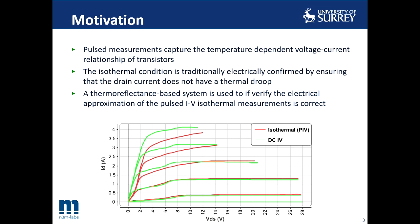Post-IV measurements are usually employed to capture the temperature-dependent IV characteristics of transistors in an isothermal environment. The isothermal condition is usually electrically checked by ensuring that the drain current does not have a thermal droop, or in other words, we reduce the excitation pulse widths applied to the device until the self-heating of the device is negligible. We used a thermal reflectance based system to directly verify this electrical approximation of the isothermal condition.